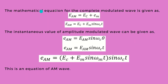The mathematical equation for the complete modulated wave is given as eAM = (EC + EM), and we can write EM as EM sin(ωM t). The instantaneous value of the amplitude modulated wave is given as eAM = EAM sin(ωC t).